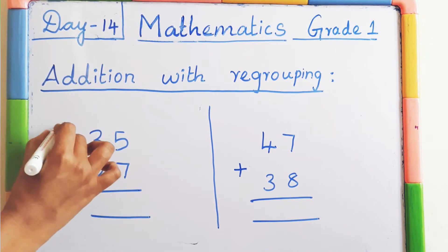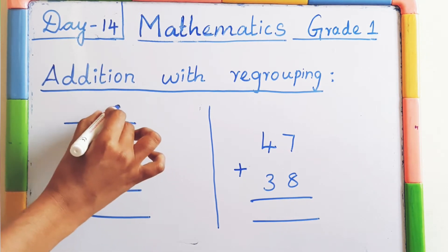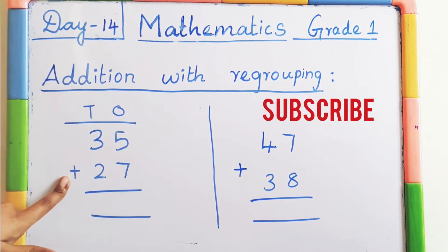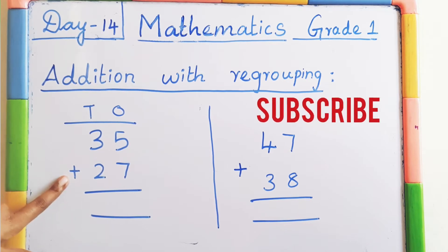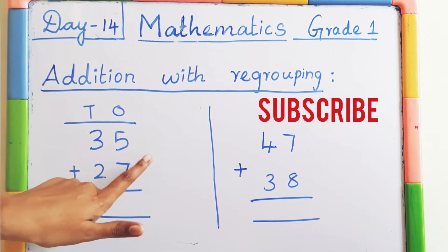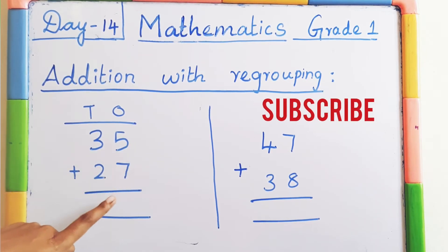First step: always write the ones place and tens place. This plus sign is called the addition symbol. Always start with the ones place.